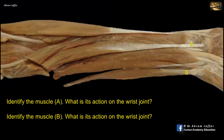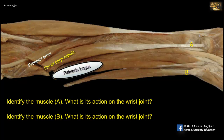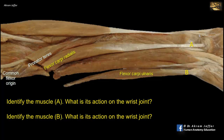Identify muscles A and B. What is the action of each on the wrist joint? This is a dissection of the muscles of the flexor compartment of the forearm. The muscles of the anterior compartment are best thought of as lying in three layers: superficial, intermediate, and deep. The superficial layer consists of four muscles: pronator teres, flexor carpi radialis, palmaris longus (not present in this body), and flexor carpi ulnaris. These muscles arise from a common flexor origin on the anterior surface of the medial epicondyle of the humerus. Note that they are partly fused together in the upper part of the forearm, so that the intermediate layer cannot be easily seen.